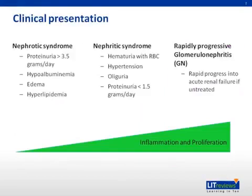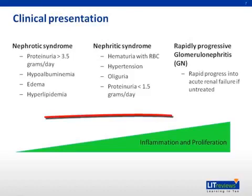The clinical presentation of glomerulonephritis may vary from asymptomatic urinary abnormalities to nephrotic or nephritic syndrome, rapidly progressive glomerulonephritis, or chronic glomerulonephritis.